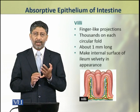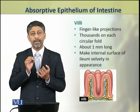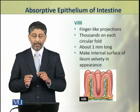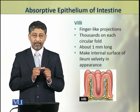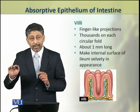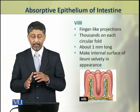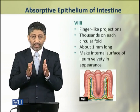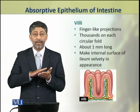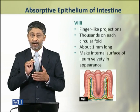A villus is a small structure, with a length of about 1 mm. Because of the presence of villi, the surface of the intestine appears velvety. If we open the intestine and see the surface of it, it appears velvety — that is because of the presence of villi on it.